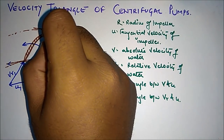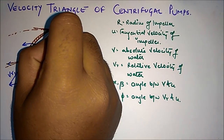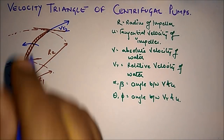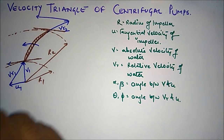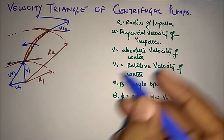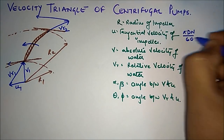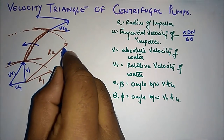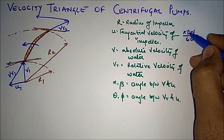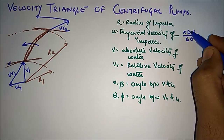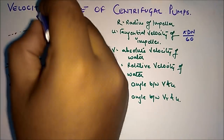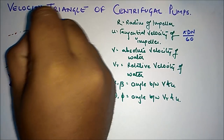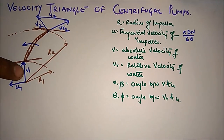The water enters with this velocity and exits with velocity Vr2. Since the blade is moving in this direction, the tangential velocity U2 is also in this direction. Now U2 will be greater than U1 because U equals pi*D*N divided by 60 — for the outer circumference, D is greater, so U2 is more since U is directly proportional to D. So this is U2 at exit, and V2 is the absolute velocity at exit.